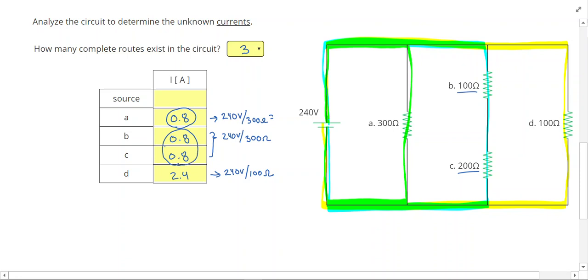With another 0.8 for B and C, but I don't want to count those separately. So for the source, I'm going to add 0.8 plus another 0.8 plus 2.4 and that will give me a total of 4 Amps.